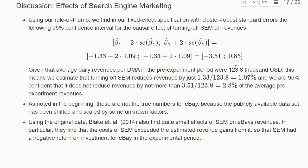Given that the average daily revenues in the pre-experimental period were 123.8 thousand US dollars, our estimator of 1.33 is only 1.07% of the average revenues. And if we look at the largest effect in our 95% confidence interval — minus 3.51 — that's also only 2.8% of the average revenues in the pre-experimental phase. So the estimated effects of turning off search engine marketing are fairly small.